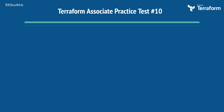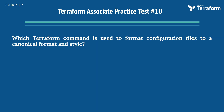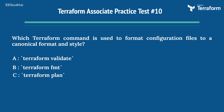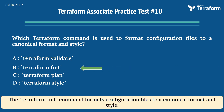The tenth question: which Terraform command is used to format configuration files to a canonical format and style? Options are: A) Terraform validate, B) Terraform FMT, C) Terraform plan, D) Terraform style. The right answer is Option B, Terraform FMT. The Terraform FMT command formats configuration files to a canonical format and style.